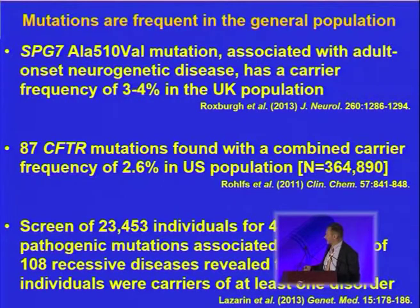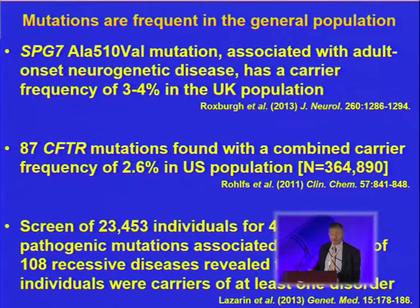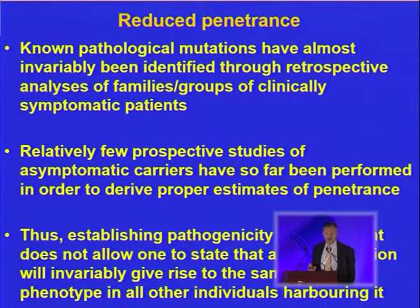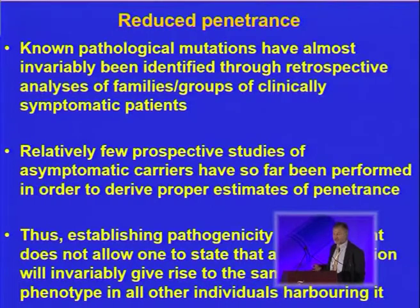The genetic variants responsible for morbidity and perhaps eventually mortality are remarkably common in the general apparently healthy population. So it's no surprise that many of the mutations in HGMD also occur in the general population — they're there in single dose, perhaps lurking to spring surprises on us in later life.